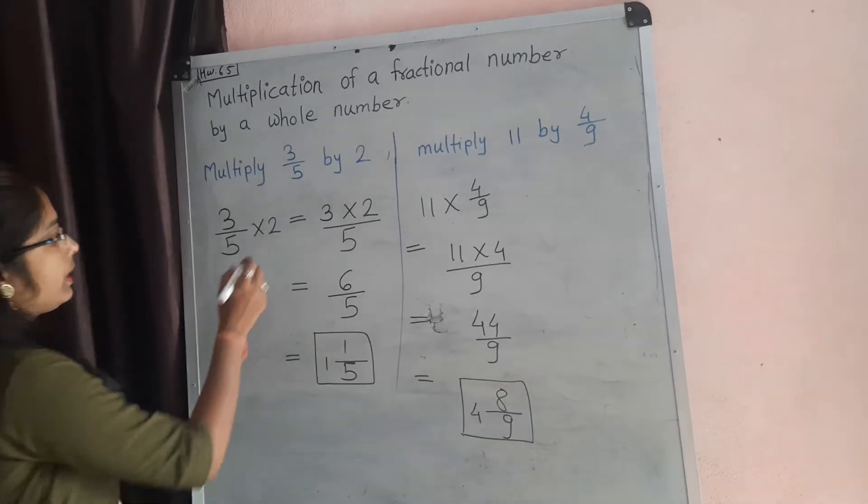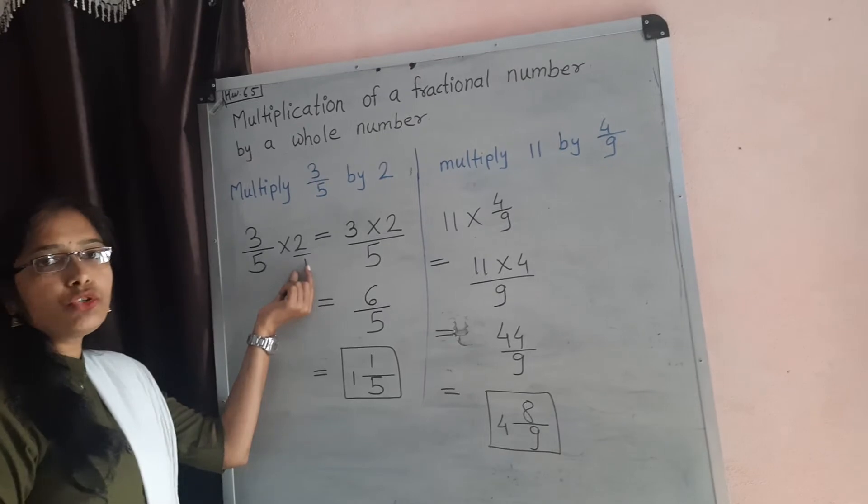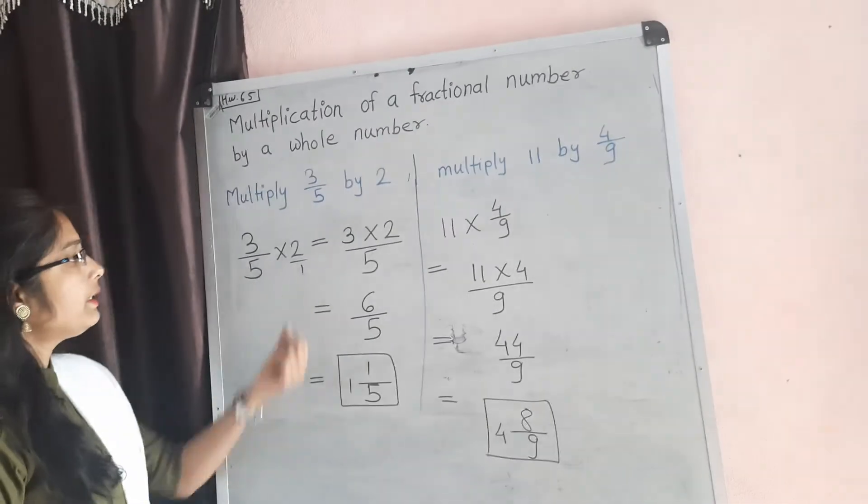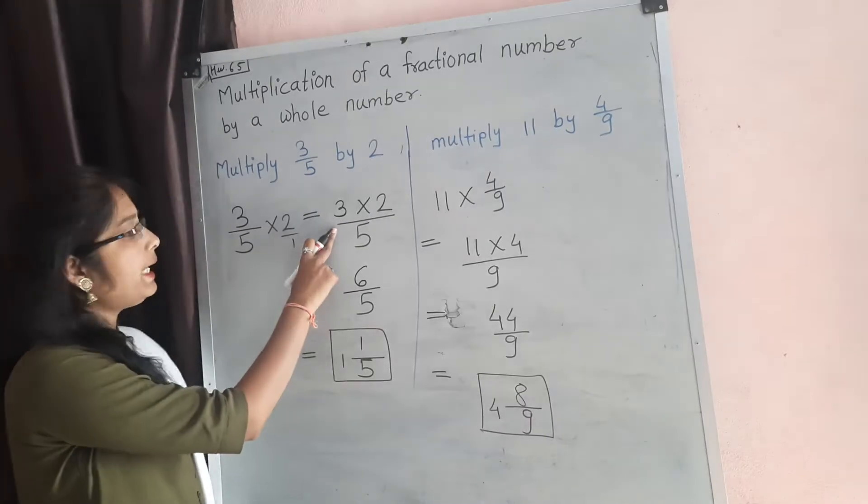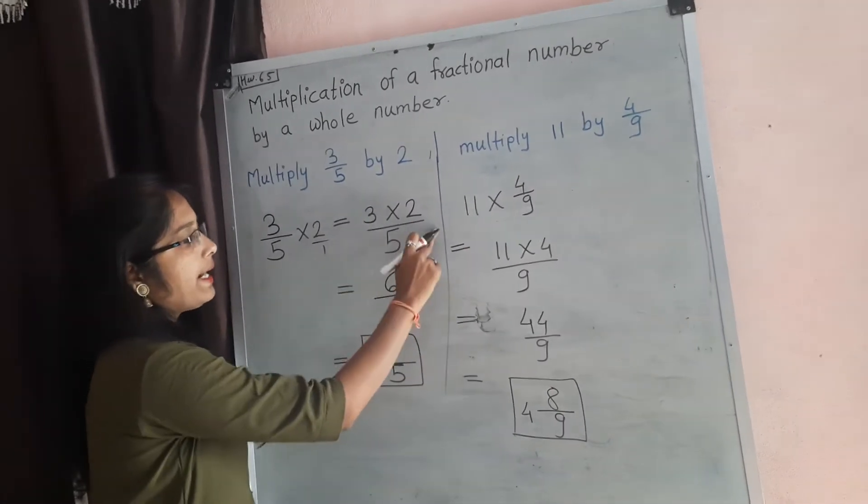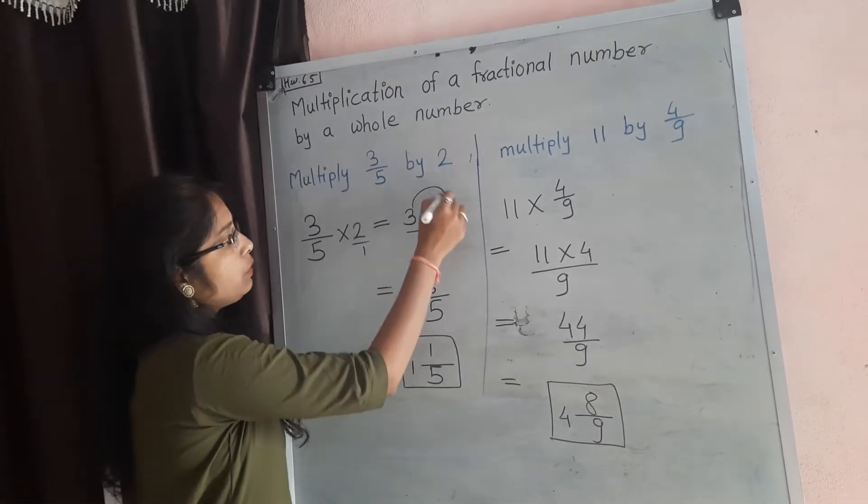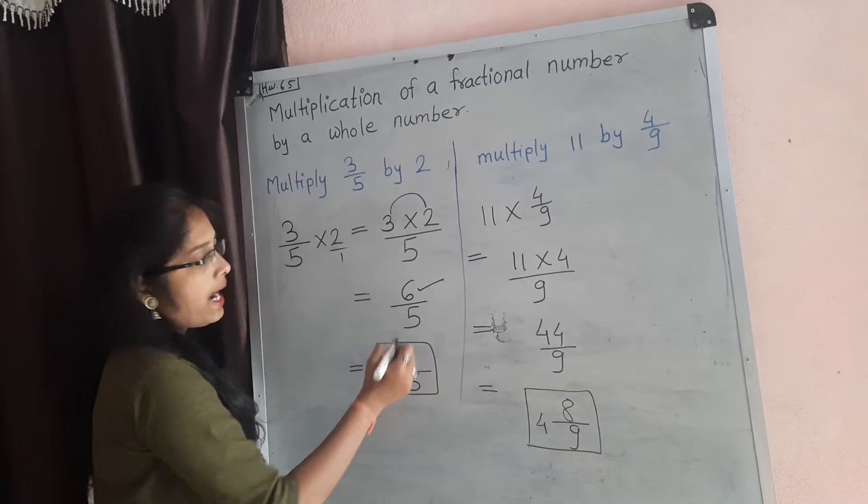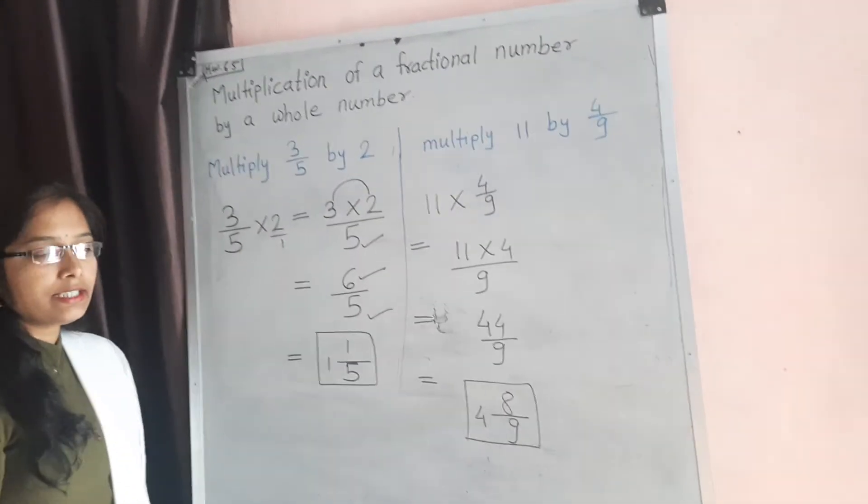First here is 1. The denominator kuch nahi reheta hai means 1. Then here we multiply numerator with numerator means 3 into 2, divided by 5. So just solve that. 3 times 2 is 6 and that denominator write down like that as it is.